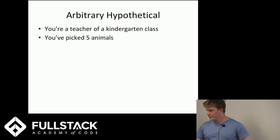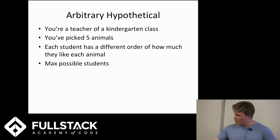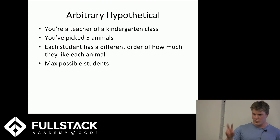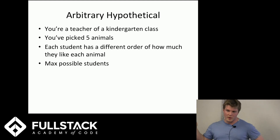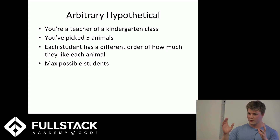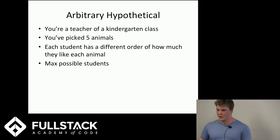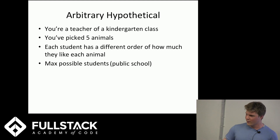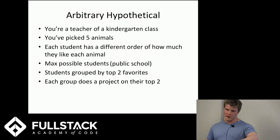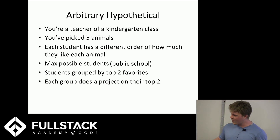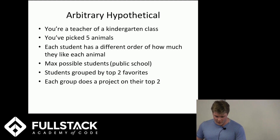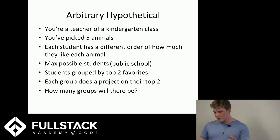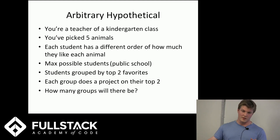Here's the metaphor. You're a teacher of a kindergarten class. You've picked out five animals and you want students to do projects on their two favorites. Every student has a different preference, and you have every possible power ranking of these five animals represented in your class — the maximum possible number of students. Instead of grading them all individually, you're going to have them group up by their top two favorites. Order doesn't matter. The question is: how many groups are there going to be? This is synonymous with: how many ways are there to choose two things out of five?